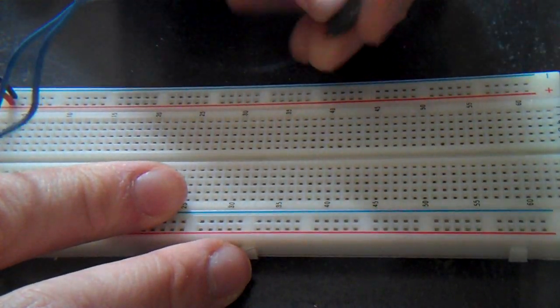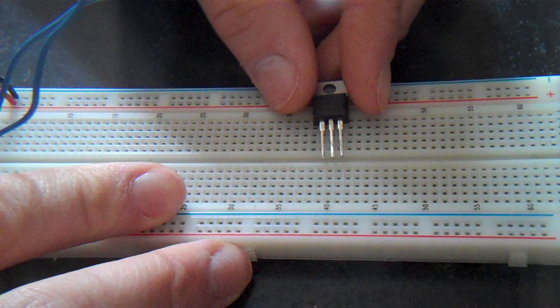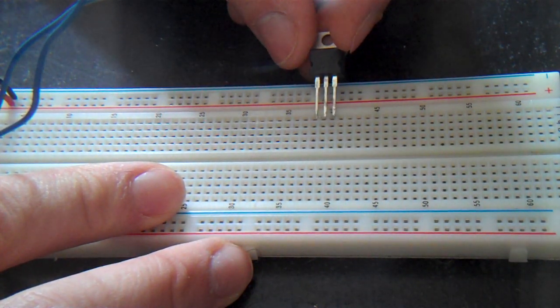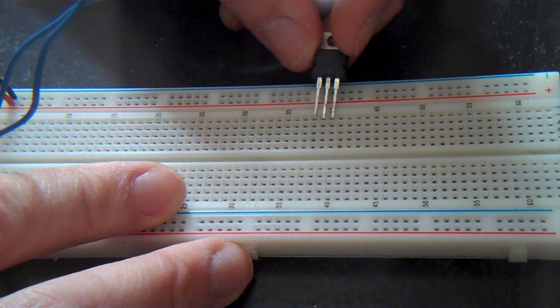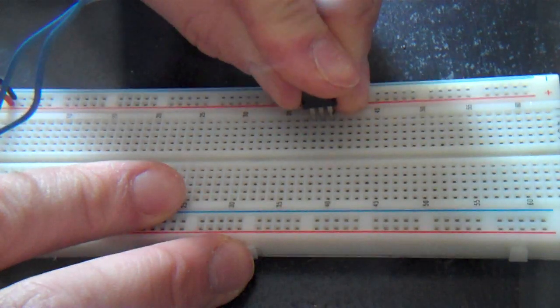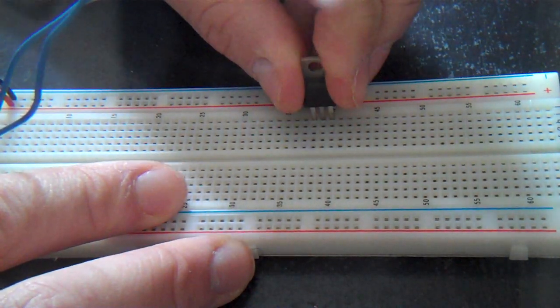I'm going to take my TIP 31 and I'm going to connect it to these three pins here on the breadboard. When you connect it, make sure the writing on the TIP 31 is facing you. Just like that.